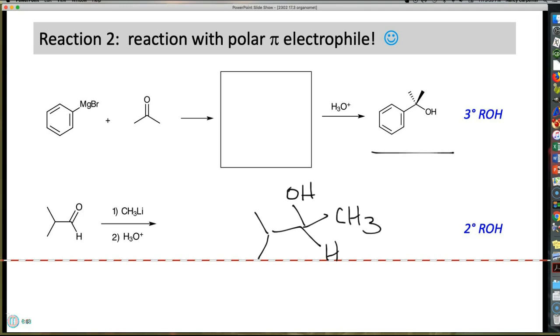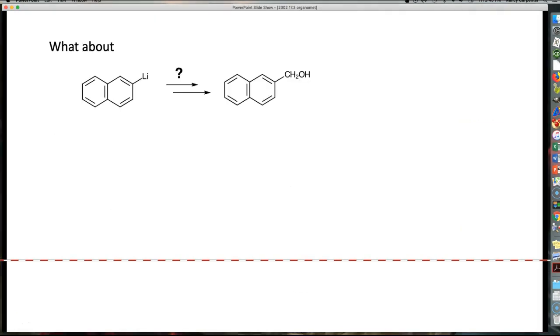So Grignards plus aldehydes give secondary alcohols. Grignard plus ketone, tertiary. Grignard plus aldehyde, secondary. What about a primary alcohol? How do I make a primary alcohol from this chemistry?